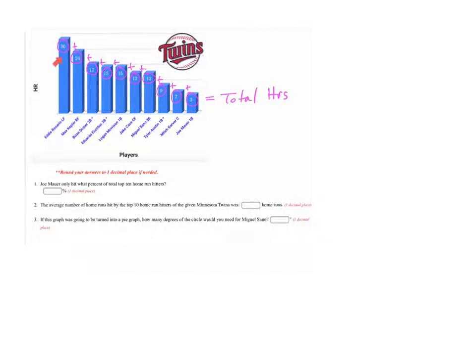To make sense out of this question, you have to first add up all the home runs that were hit by all the players of the top 10 hitters on the Twins team. Once you know the total number of home runs, you can then figure out what percent that Joe made up of that total.